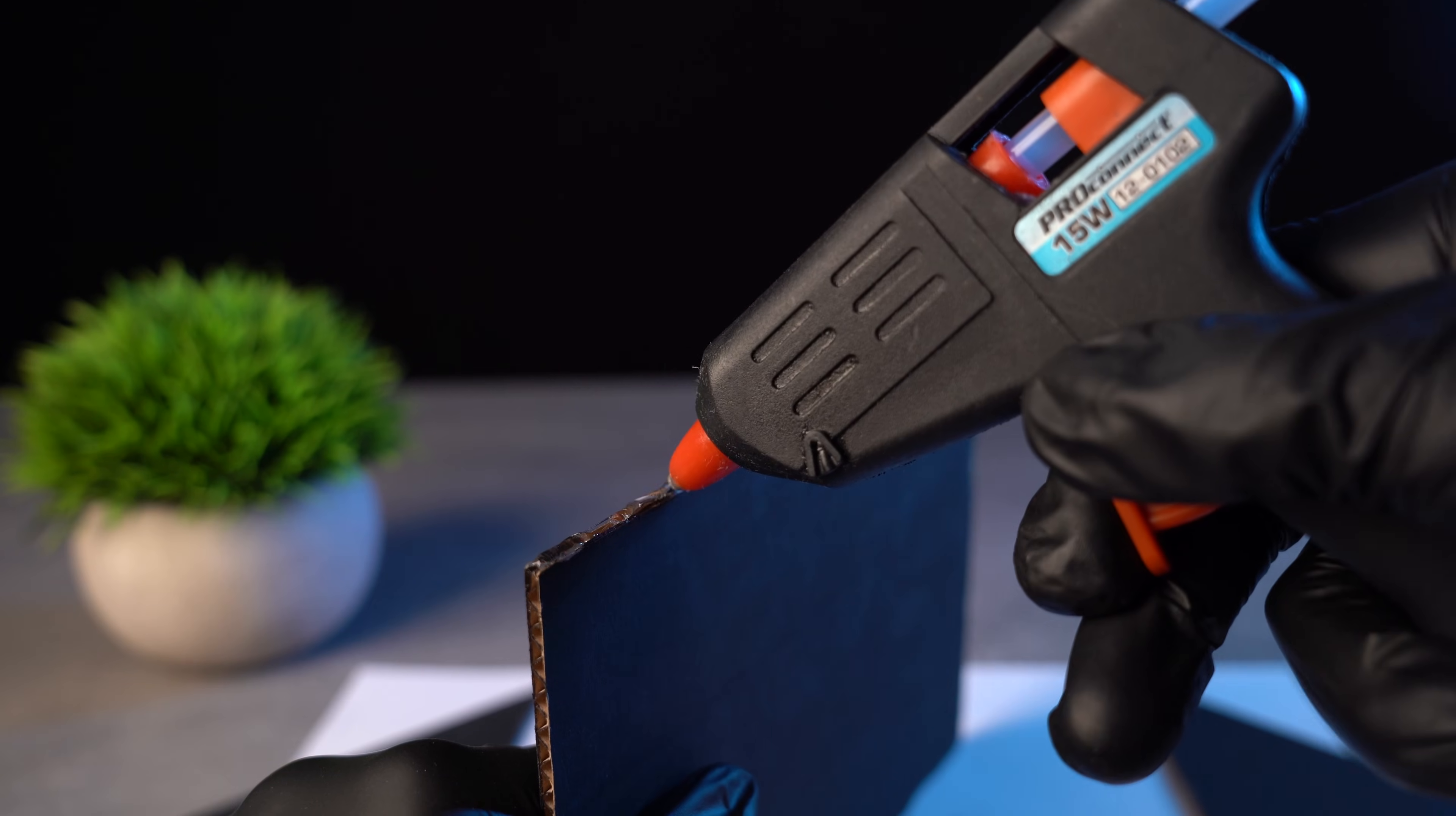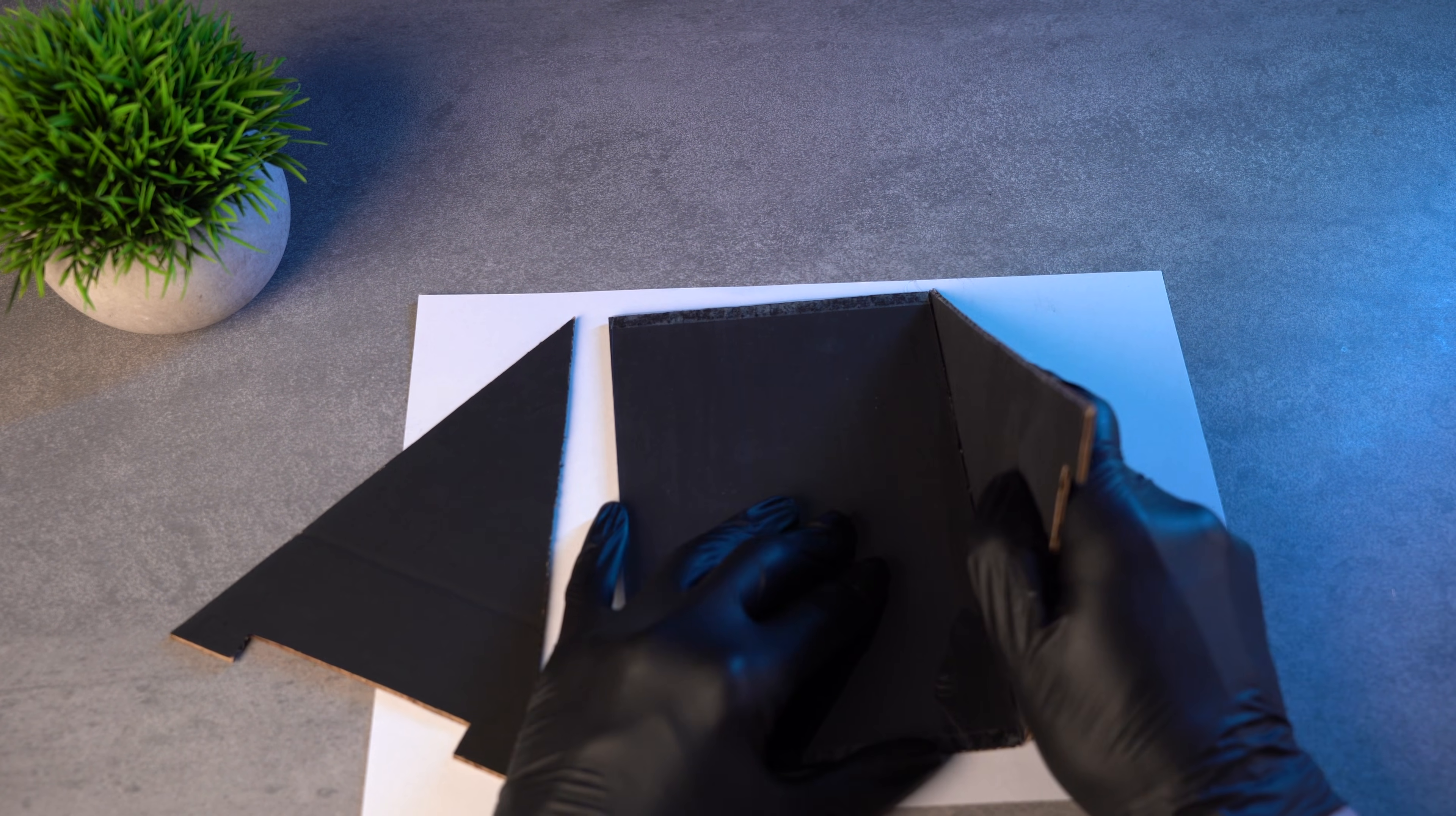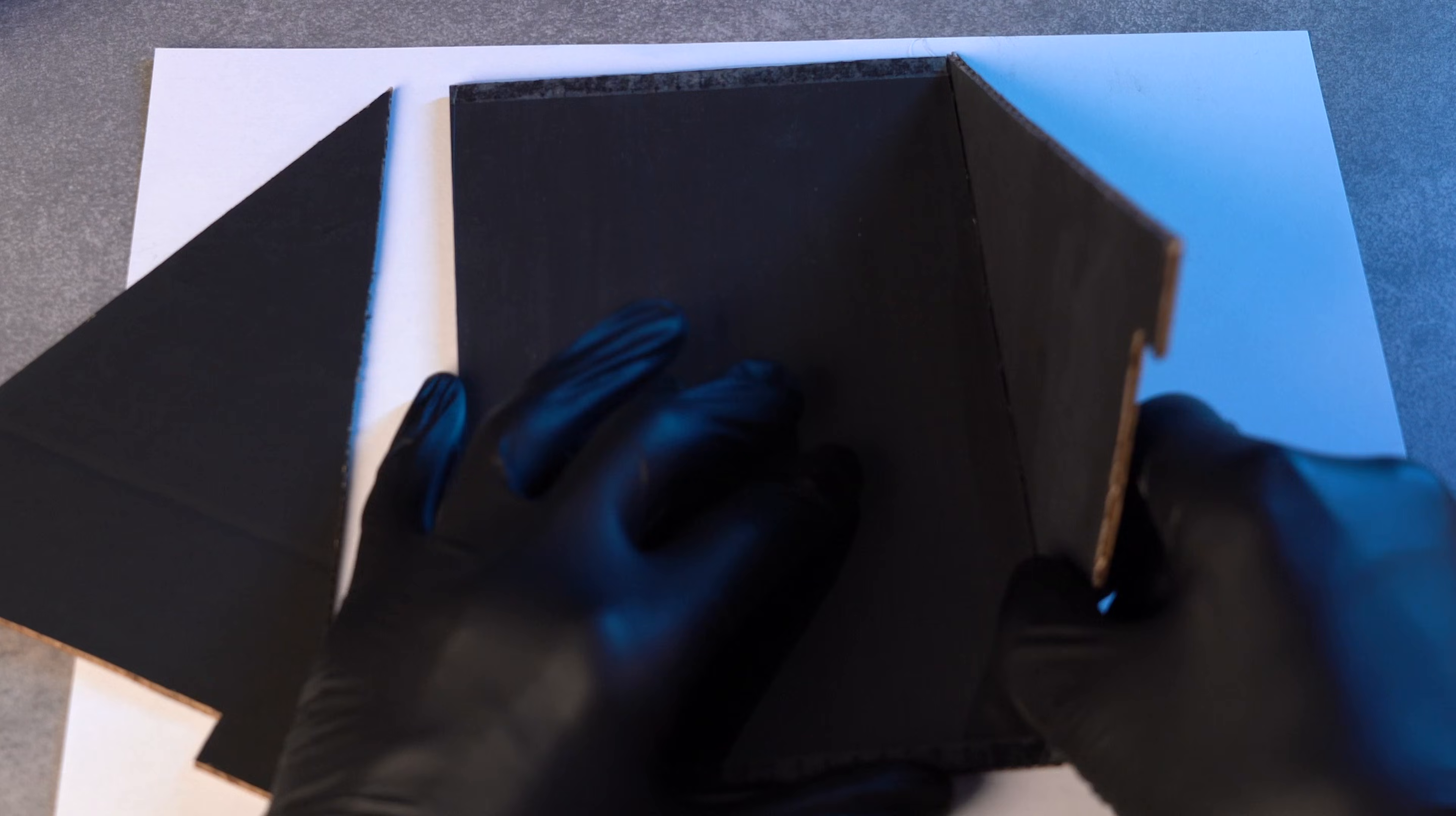I take a hot glue gun and apply glue to the side edge. I place the piece on the table and quickly attach the first side triangle. It's important to press the rectangular piece flat against the table, because cardboard can warp a little after painting. Pressing it down keeps everything straight while the glue sets.